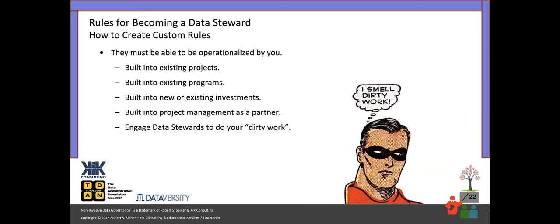Some ways to operationalize figuring out who the stewards are: build stewardship into your existing projects and programs. Information security programs are a level of governance within your organization — they may help you know who does what with data and help you recognize your users, or even who's defining the rules around protection of data. Building it into other existing governance-like programs will help you operationalize those rules for determining who the data stewards are.